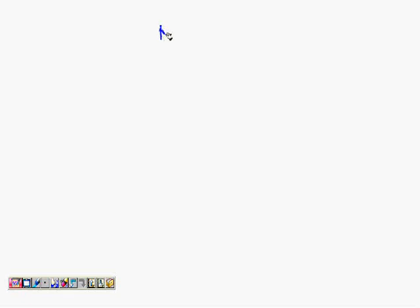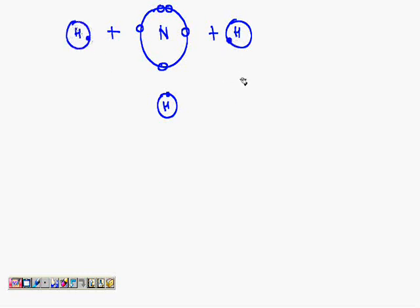Nitrogen is there. I am not drawing the inner orbits. One, two, three, four, five - these are the five electrons in the outermost orbit of nitrogen. We have then three more hydrogen atoms: the first hydrogen atom, the second hydrogen atom, and the third hydrogen atom. When these all combine together, again show the nitrogen atom in the center, show the overlapping of the orbits of hydrogen and nitrogen.